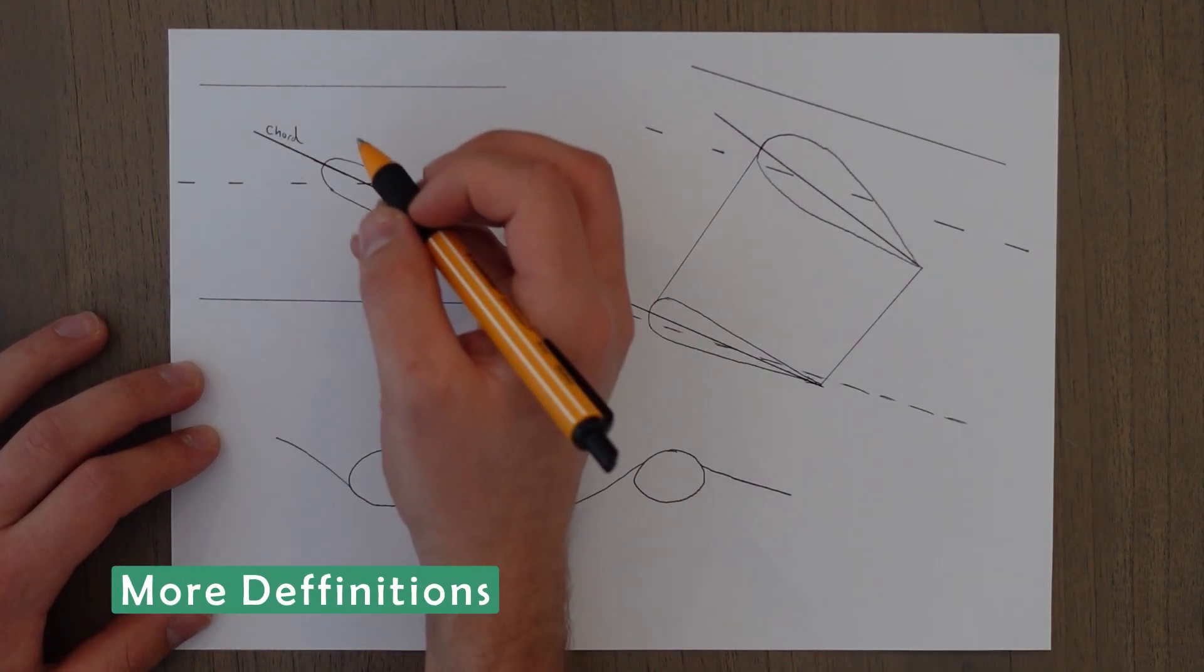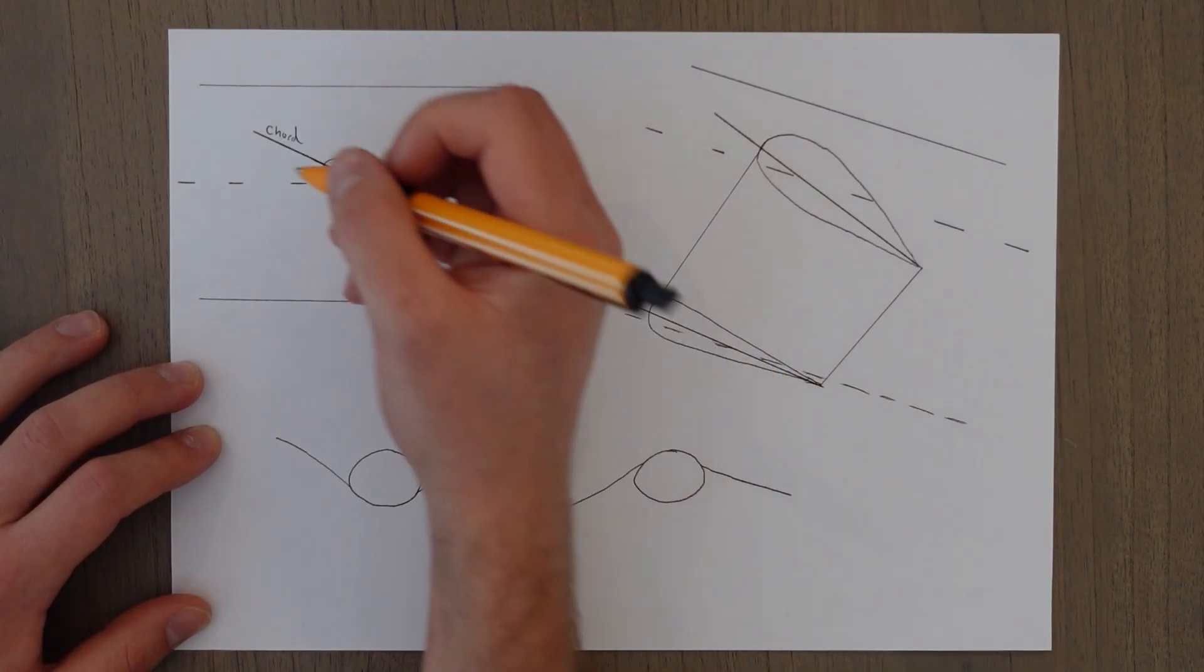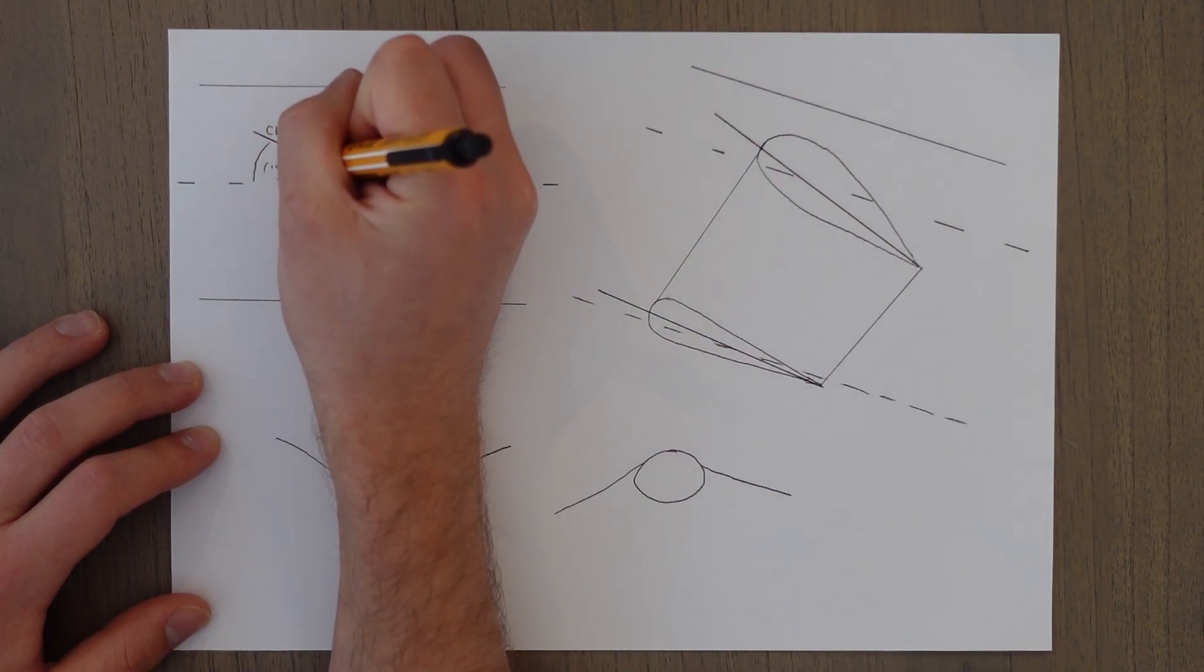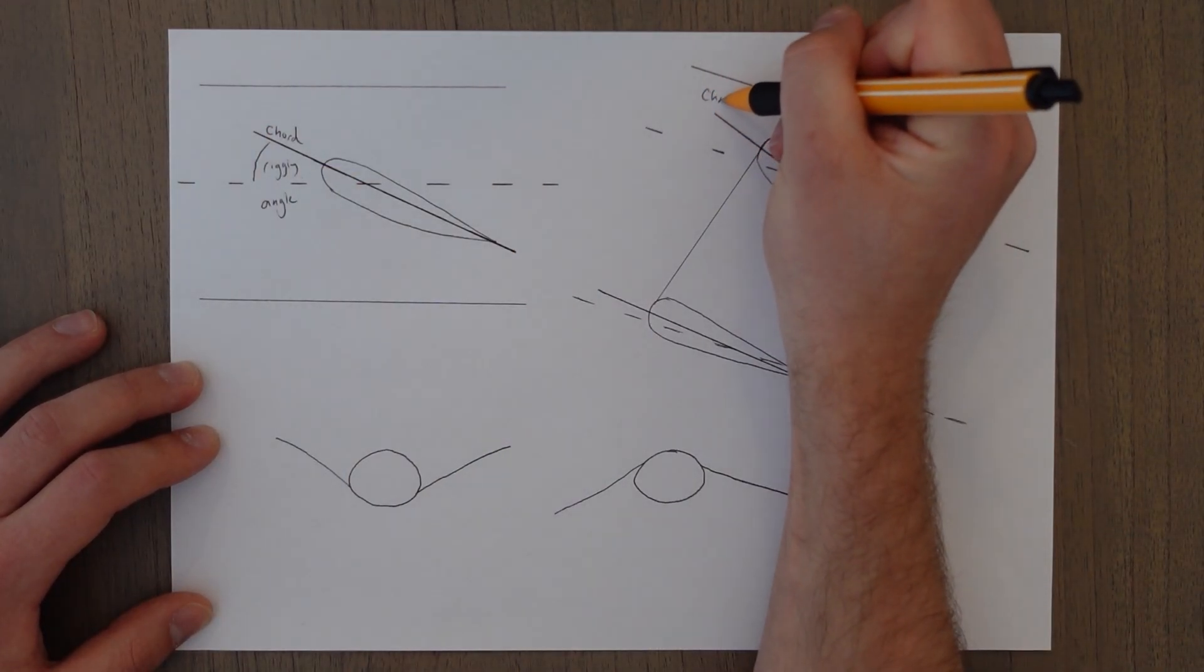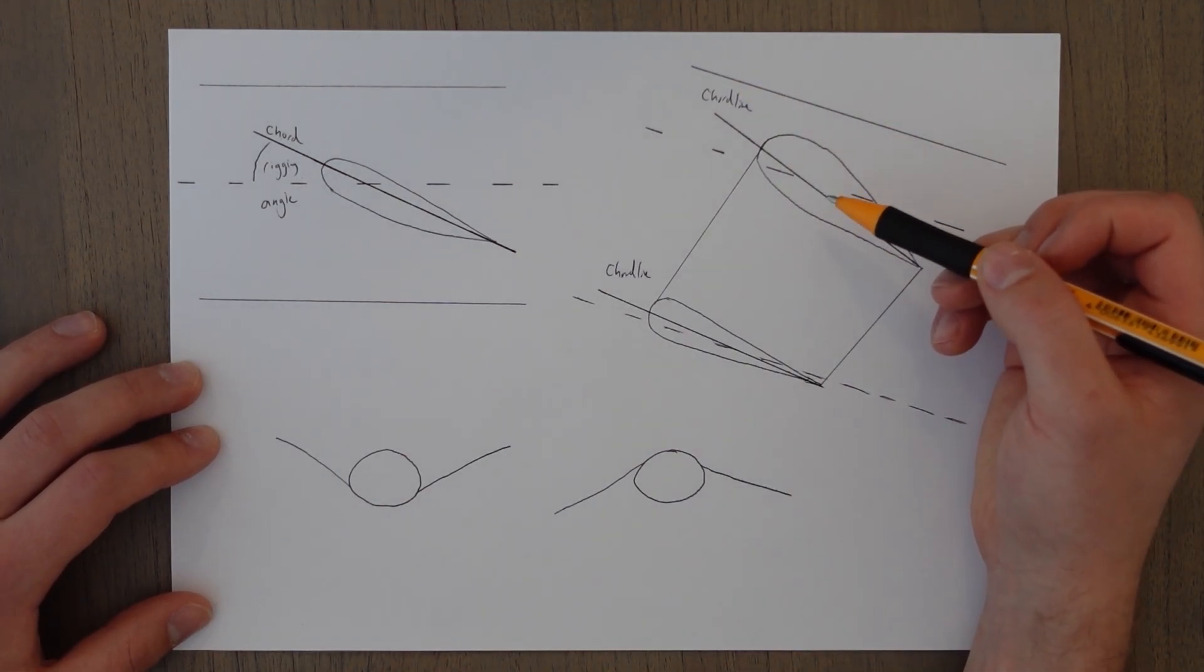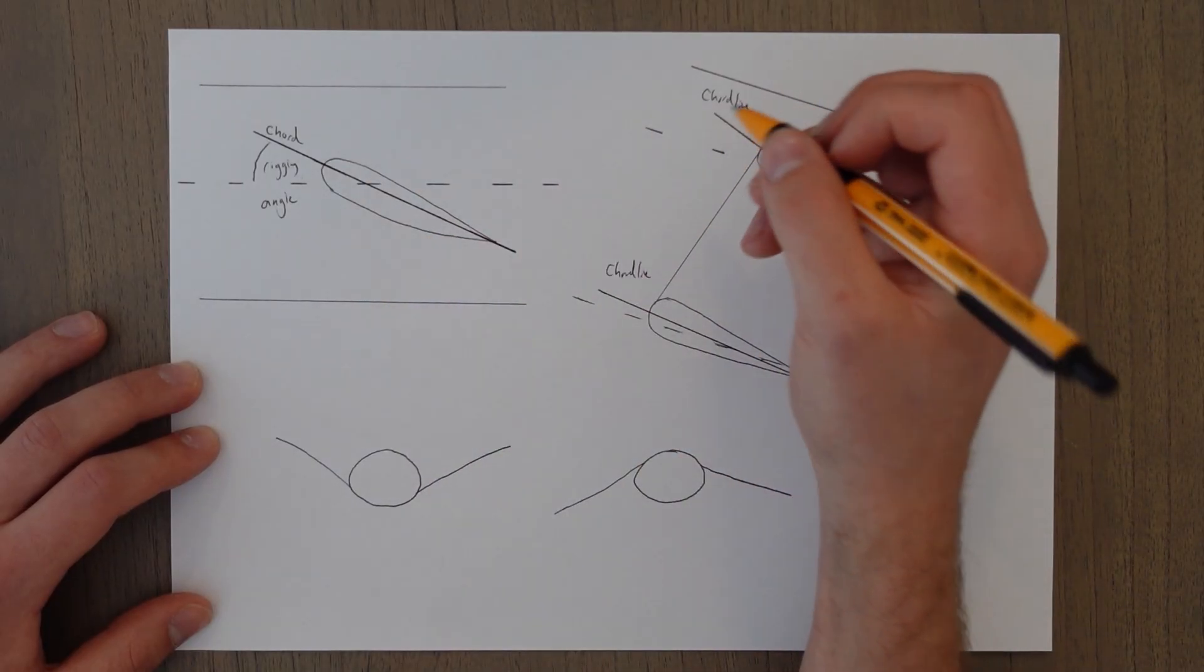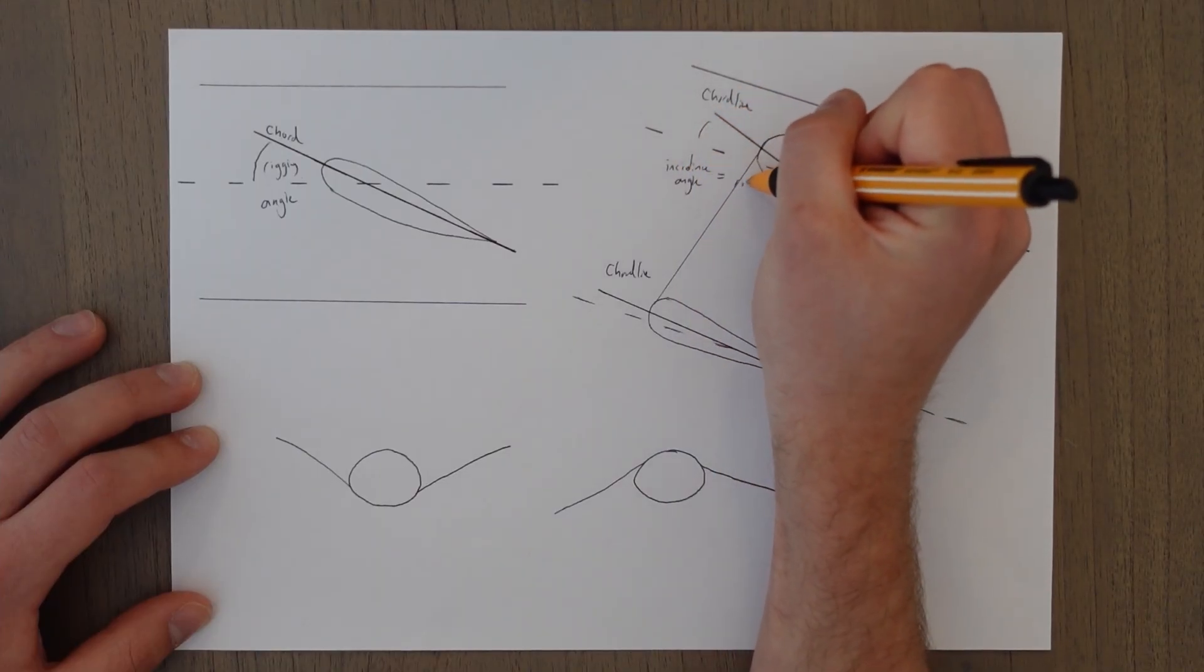The rigging angle is the angle between the chord line of the wing and the longitudinal axis of aircraft at the root of the aircraft. It's a measure of how the wing is mounted onto the aircraft. The angle of incidence is the angle between the chord line and the longitudinal axis of the aircraft. So at the root of the aircraft where it's mounted that chord line is going to be exactly in the same place. So we're going to have the rigging angle equal to the angle of incidence here. So your angle of incidence or incidence angle is equal to your rigging angle at the root.